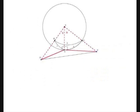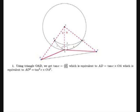Looking at right triangles OAD and OAE in our diagram, we can conclude the following using trigonometric ratios. First, using triangle OAD: tan C equals AD over OA, which gives AD equals tan C times OA, and AD squared equals tan² C times OA squared. Second, similarly from triangle OAE: AE equals tan B times OA, and AE squared equals tan² B times OA squared.